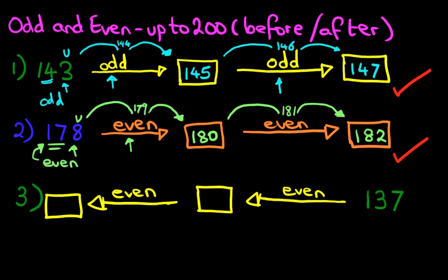So let's have a look at this number 137. The first two digits we're not interested in — let's see if we can work out whether it's odd or even. Now the seven: is seven an odd number or an even number? We count the odd numbers: one, three, five, seven. Seven is an odd number, therefore 137 is also an odd number.